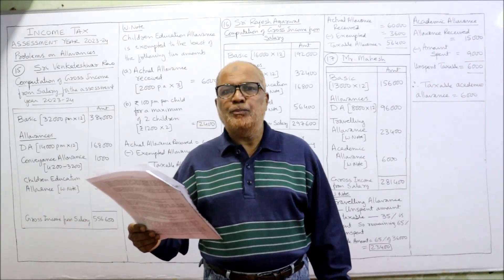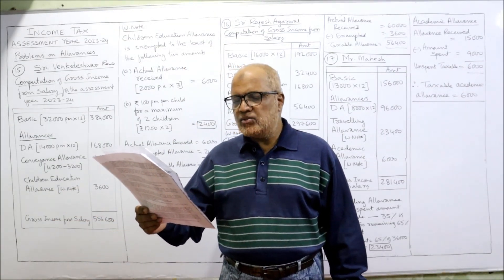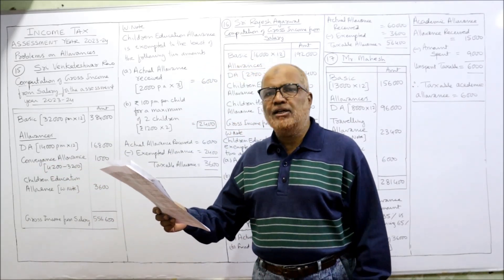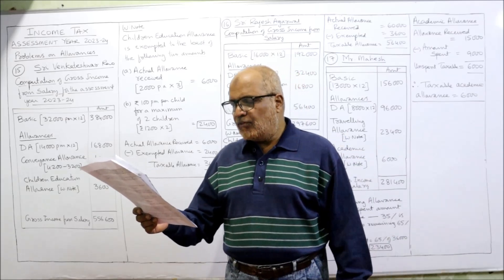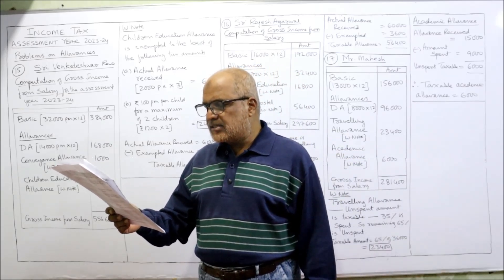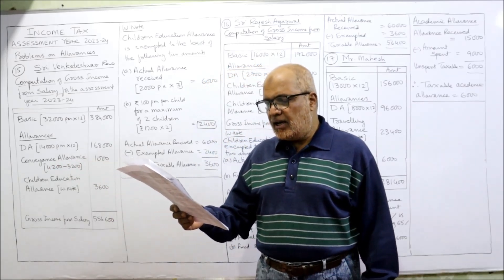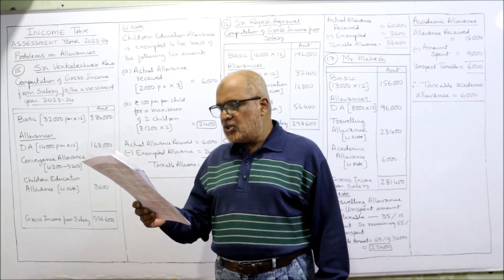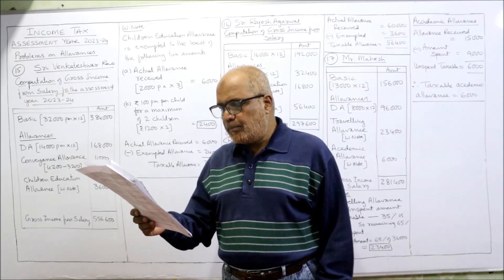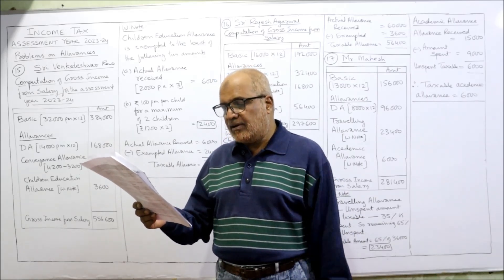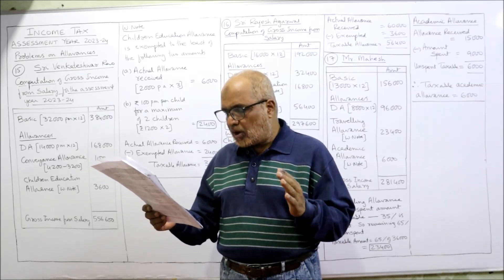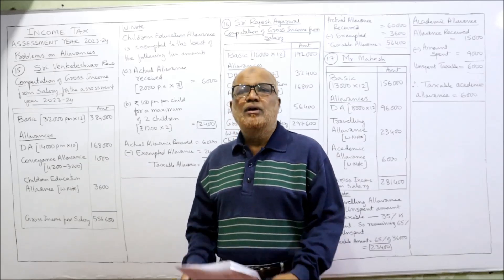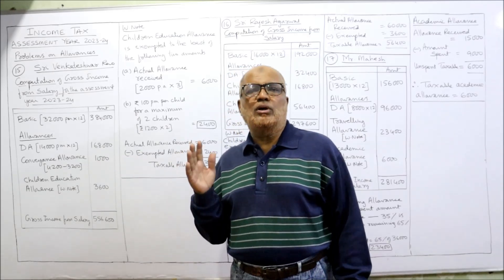Problem 15: Sri Venkateswar Rao is working as a lecturer in Lucknow. His salary particulars are: basic pay 32,000 per month, DA 14,000 per month, conveyance allowance 4,200 and actual amount spent on conveyances 3,200, children education allowance 2,000 per annum per child for his three children. Calculate the exemption to be allowed for allowances and compute the gross income from salary.